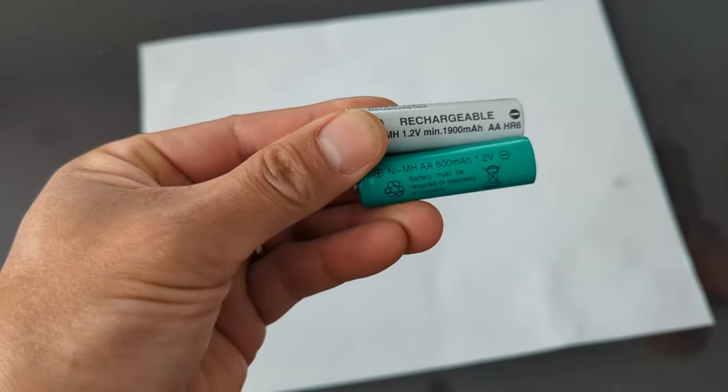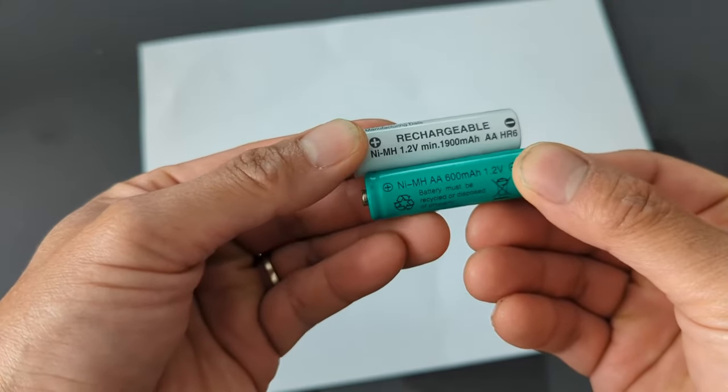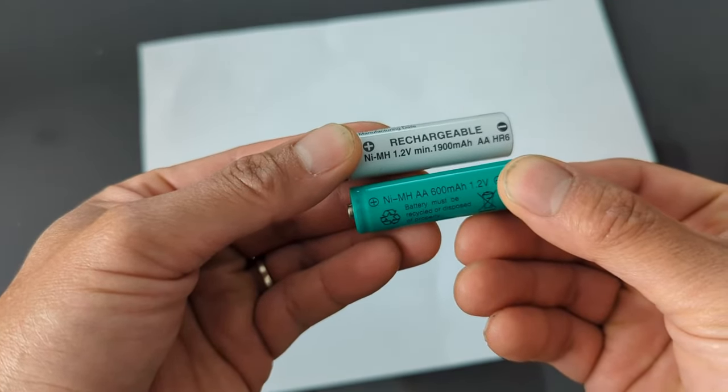As you can see the original batteries are 600 milliamp batteries versus the new ones which are going to be 1900 milliamps, so that's a nice increase in storage capacity.